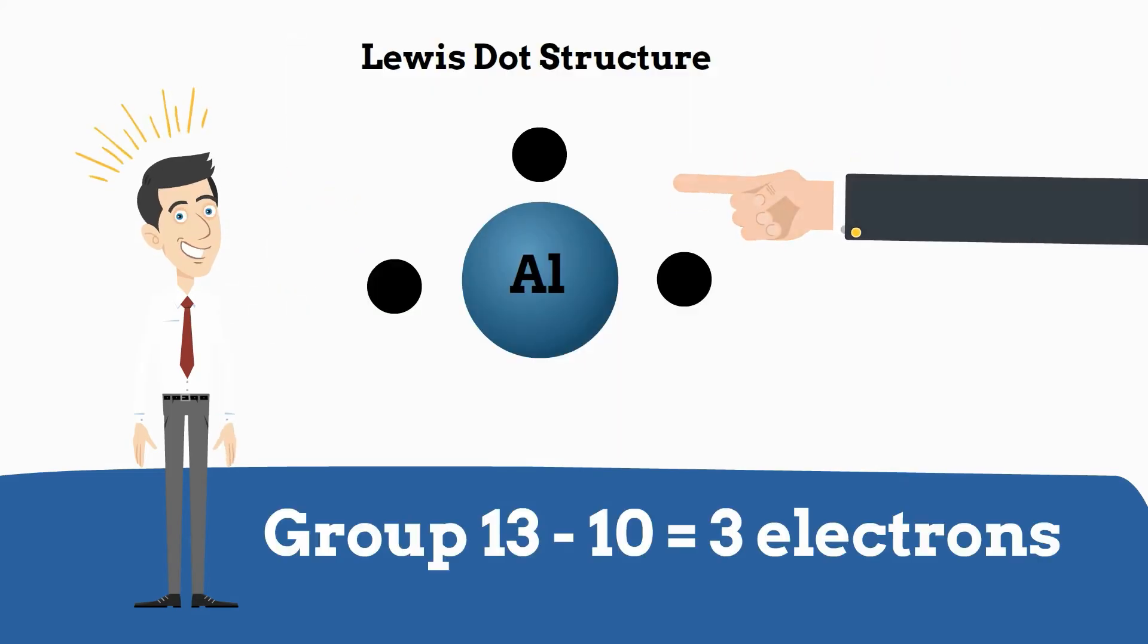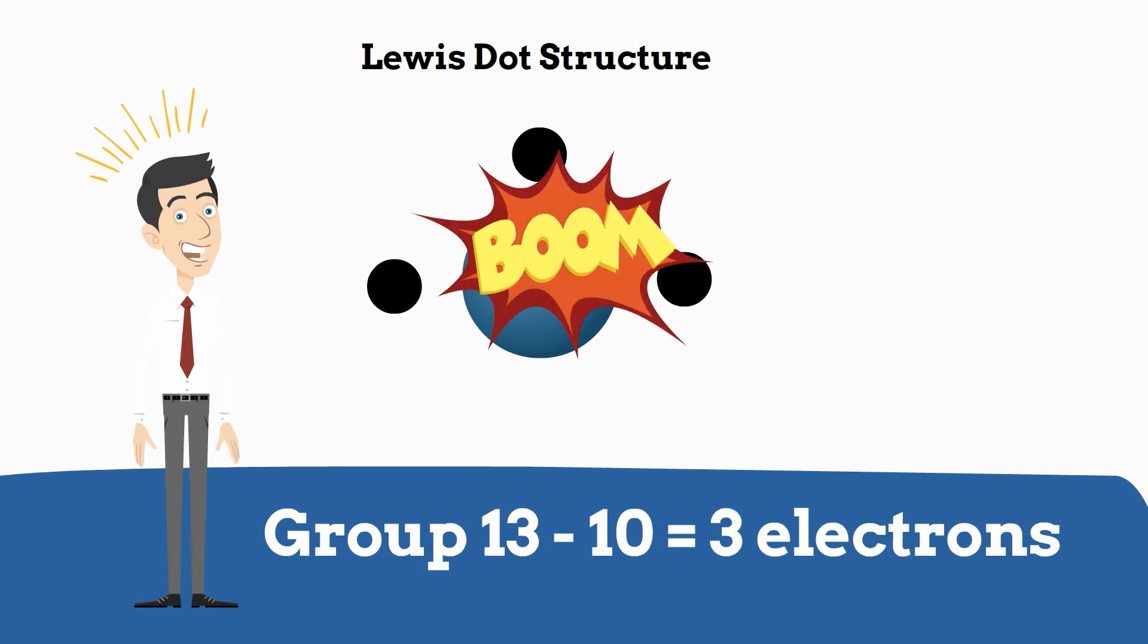Knowing the number of valence electrons helps you figure out or get an idea if the element is going to be reactive, and also some of the other elements that it may react with.